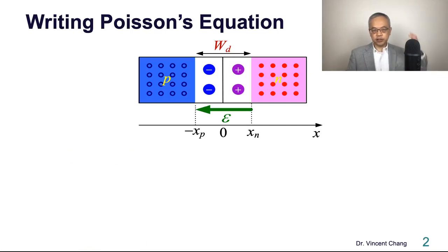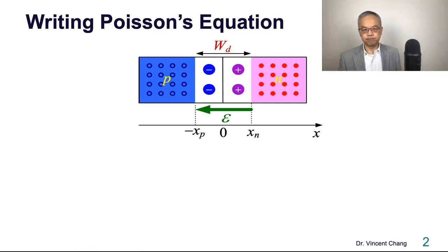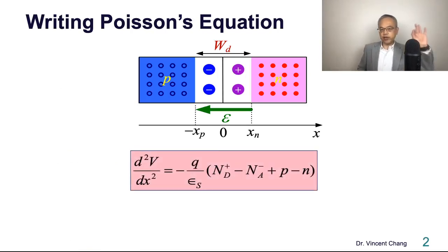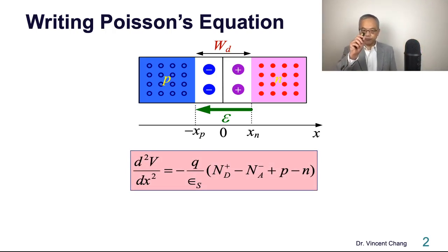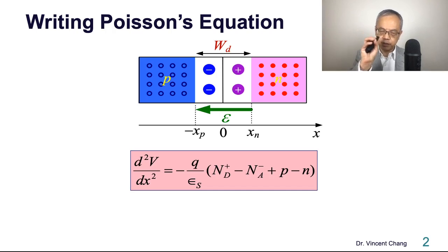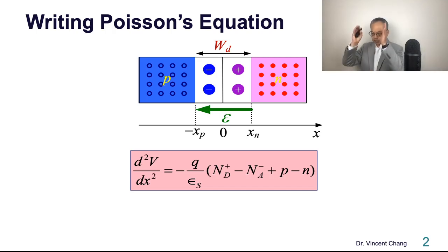First of all, let's write down the Poisson's equation specifically for semiconductor material: d²V/dx² equals negative electronic charge — the fundamental charge, which is a positive constant — divided by permittivity of the semiconductor, times the charge concentration.